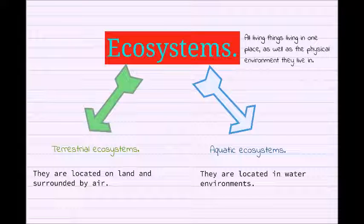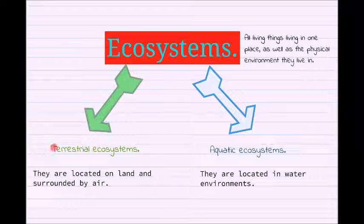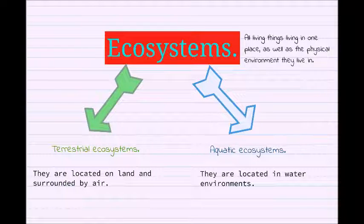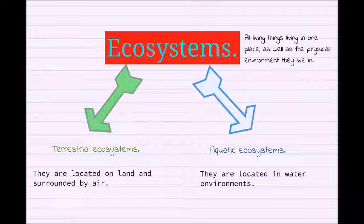Today we are going to classify them, and we are going to find terrestrial ecosystems — they are located on land and surrounded by air — and aquatic ecosystems, which are located in water environments.